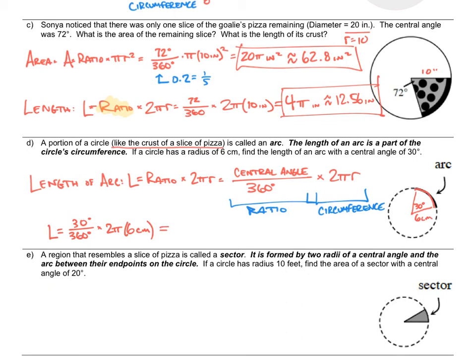Let's see if we can do this one in our head. 30 divided by 360 is the same as 3 divided by 36. Since 12 times 3 is 36, this is equivalent to one-twelfth. And 2 times 6 is 12. So one-twelfth times 12 is 1, and I'm left with just plain π. So the arc length is π centimeters, which is about 3.14 centimeters.